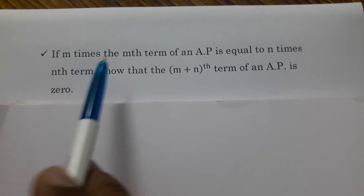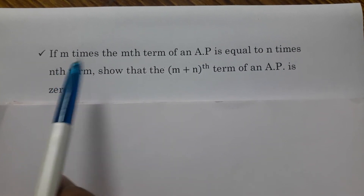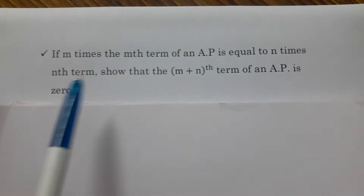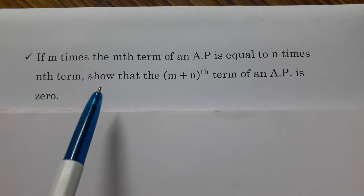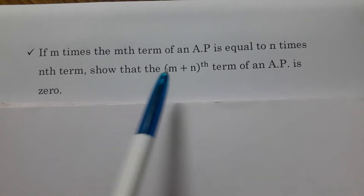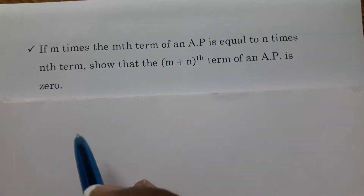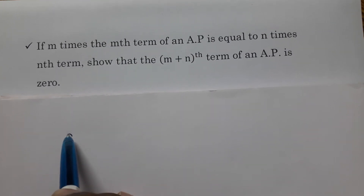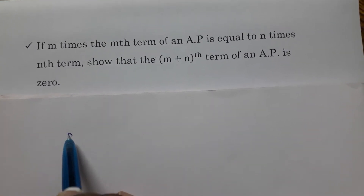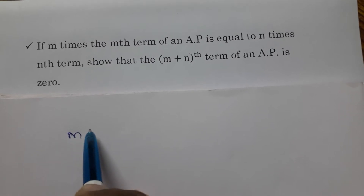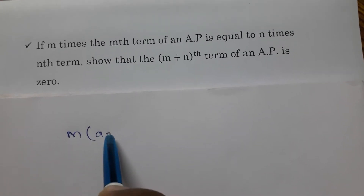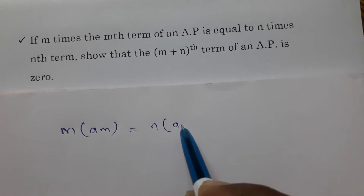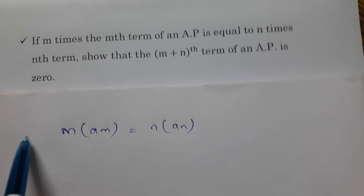Important problem from progressions. If m times mth term of an AP is equal to n times nth term, show that the (m+n)th term is 0. Given: m times mth term is equal to n times nth term.